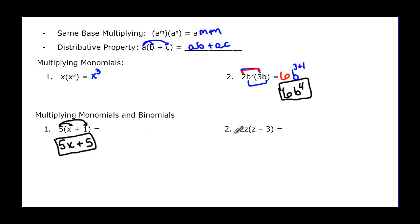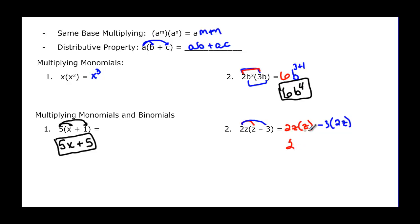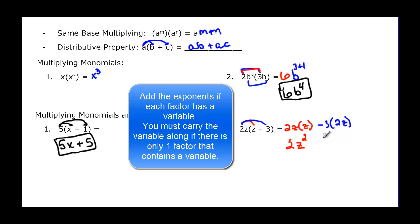What happens when we have variables? Let's do it step by step. We have 2z times (z minus 3). So 2z times z gives me 2 and two factors of z, which is 2z squared. Then negative 3 times 2z: negative 3 times 2 is negative 6, and there are no other z's, so it's minus 6z.